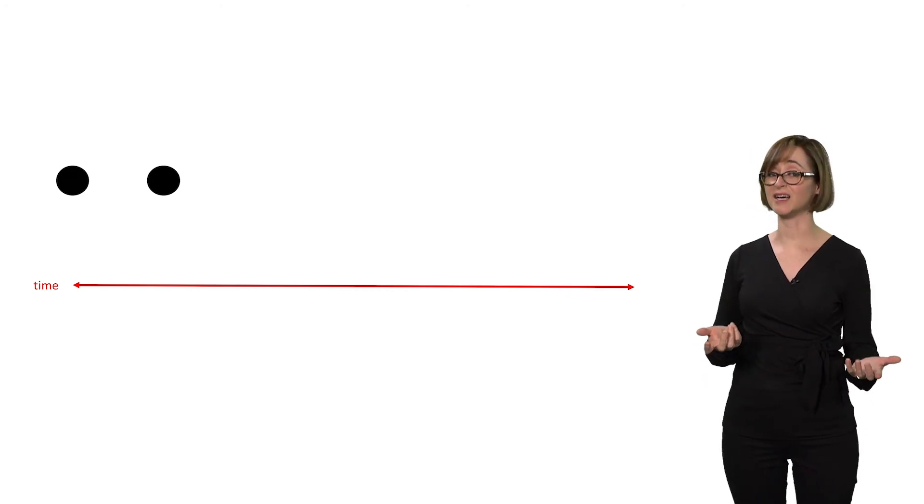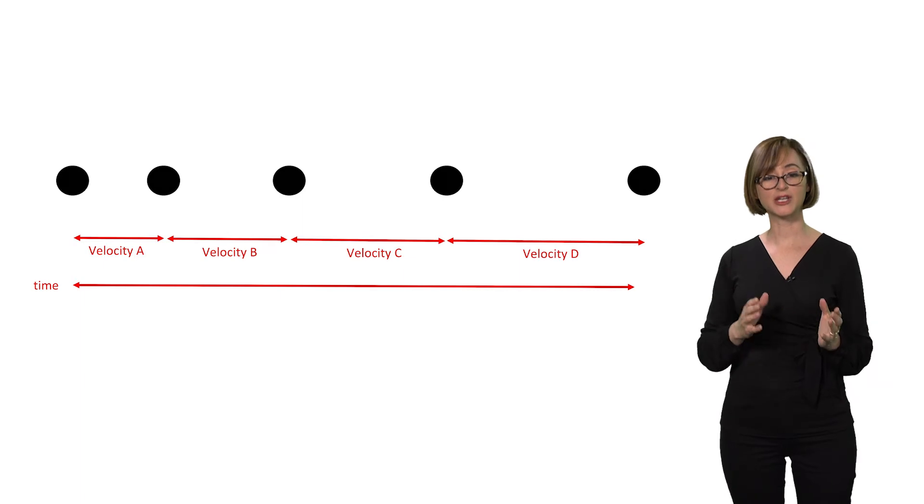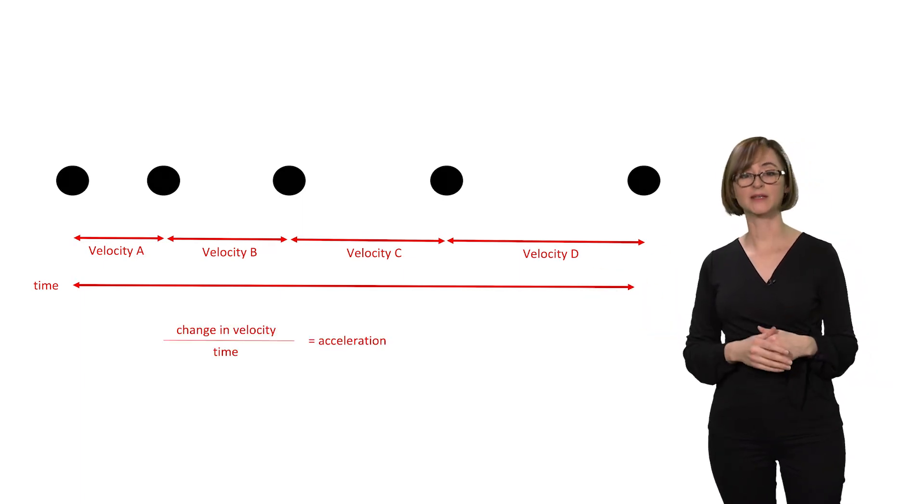Let's say the runner is getting tired, so each length is going to take longer and longer. The rate of change of his speed over time is acceleration.